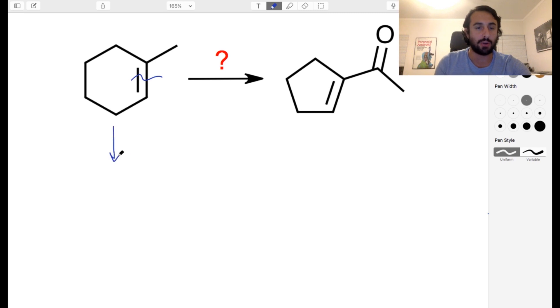So let's do ozonolysis and that's going to be ozonolysis and let's use reductive workup. So that's going to be (CH3)2S and so let's show this like this.